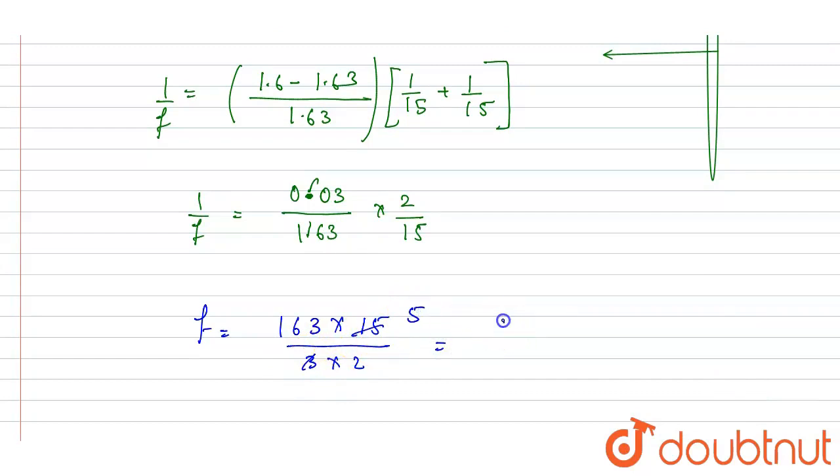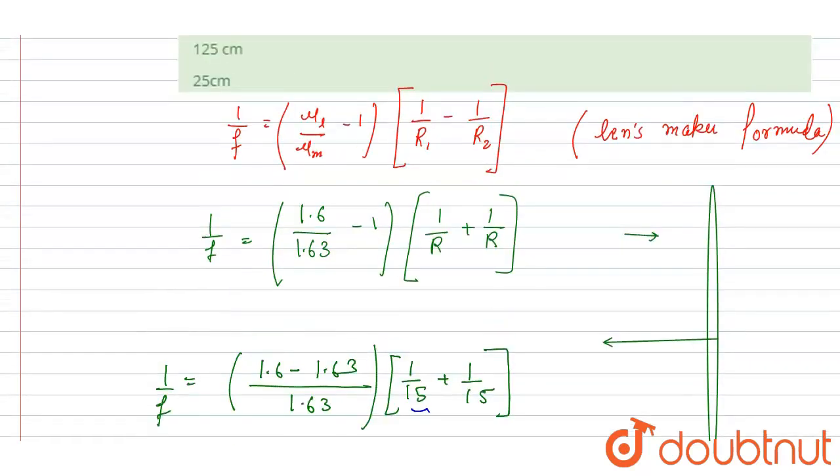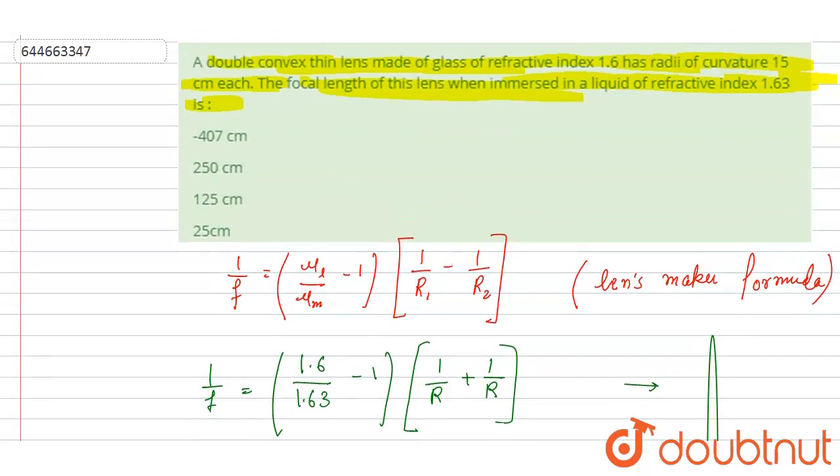Since we took this R also in centimeter, so this f will be in centimeter. Now you can check for the option, 407.5, so that is here, the nearest option is this.